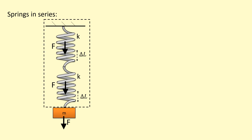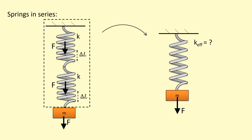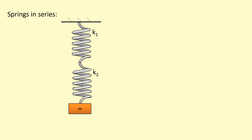Treating this whole thing as one system: if it had just been one spring with mass m hanging on it, what would the effective spring constant be for the same extension? We know the extension is 2 delta-l, so for the same force it's extending twice as much — it's half as stiff, giving a spring constant of k/2. For springs in series, the formula is: one over the effective spring constant equals one over k₁ plus one over k₂, and so on for however many springs are in series.